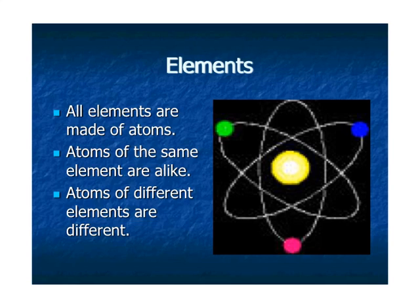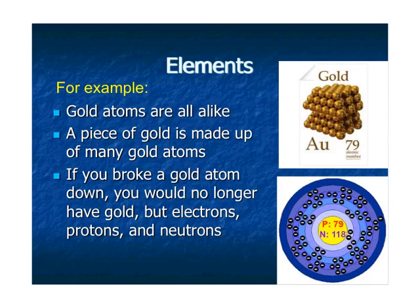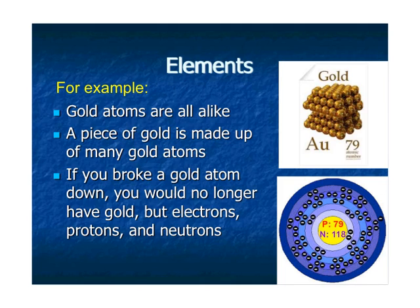All elements are made of atoms. Atoms of the same element are alike, and atoms of different elements are different. Gold atoms are all alike — a piece of gold is made up of many gold atoms. If you broke a gold atom down, you'd no longer have gold; you'd just have a bunch of electrons, protons, and neutrons. But when they go together — 79 protons, 118 neutrons, and 79 electrons — you have a gold atom.